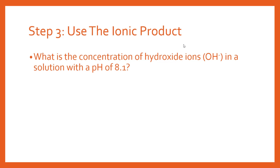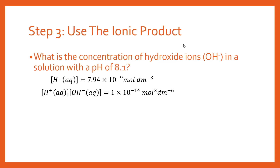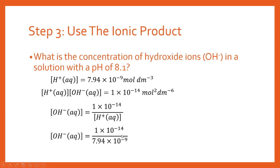The third step is to use the ionic product of water, sometimes called Kw. We already have the H plus ion concentration, and we should know that the H plus concentration times the OH minus concentration for water equals 1 times 10 to the minus 14. We now have only one unknown — the hydroxide ion concentration — so we simply rearrange it and substitute in the value we've already calculated. When you evaluate it, you get 1.26 times 10 to the minus 6 moles per dm cubed.